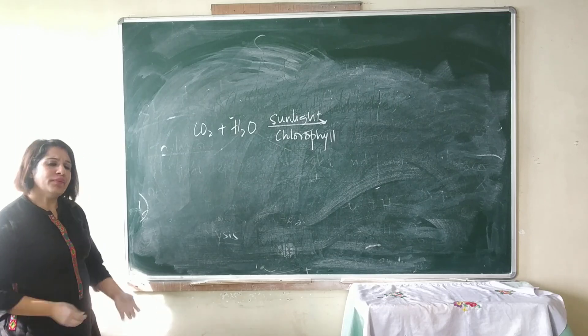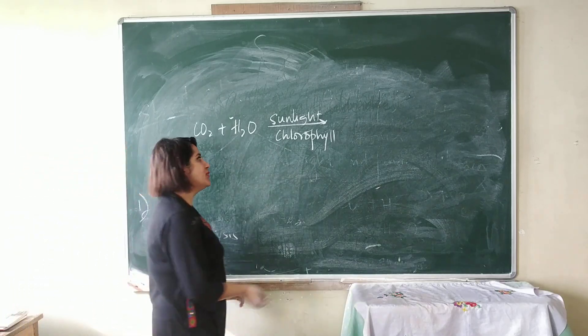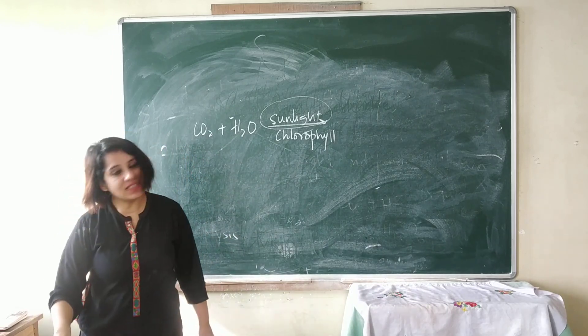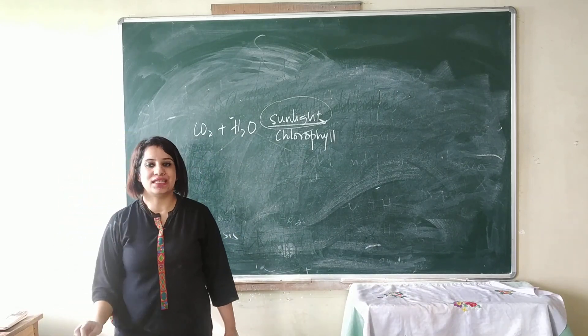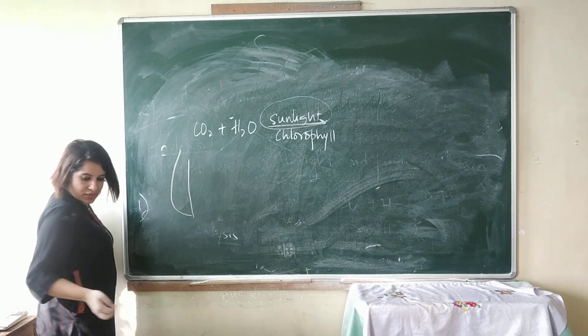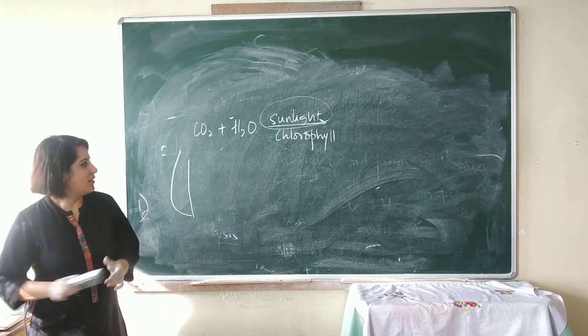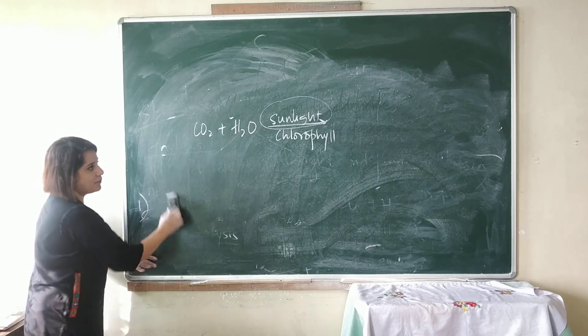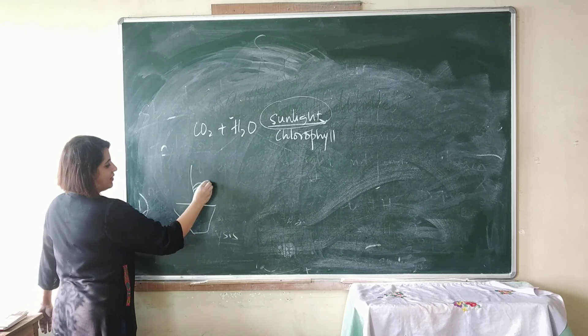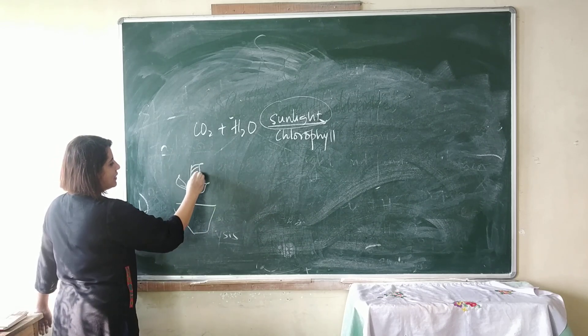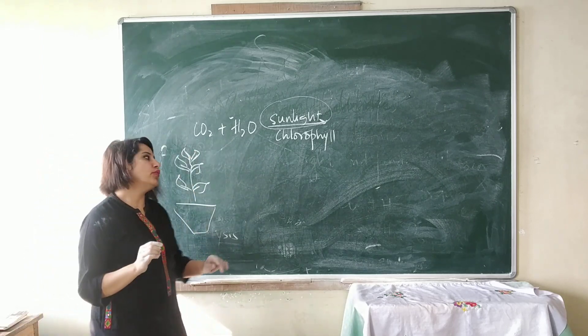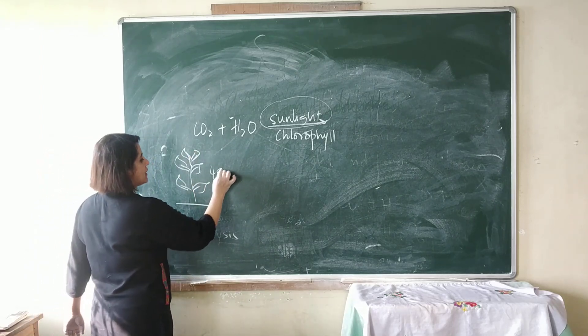Today we'll discuss how we can prove that sunlight is necessary for photosynthesis. We take a potted plant and keep it in a dark room for about 48 hours.